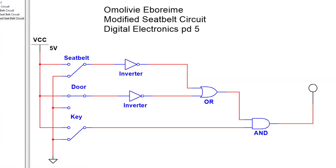To define the binary inputs for each component: when the door is at zero, the door is open; when the door is at one, it's closed. When the key is at zero, it's not in the ignition; when the key is at one, it's in the ignition. And when the seatbelt is at zero, it's not buckled; when it's at one, it's buckled.